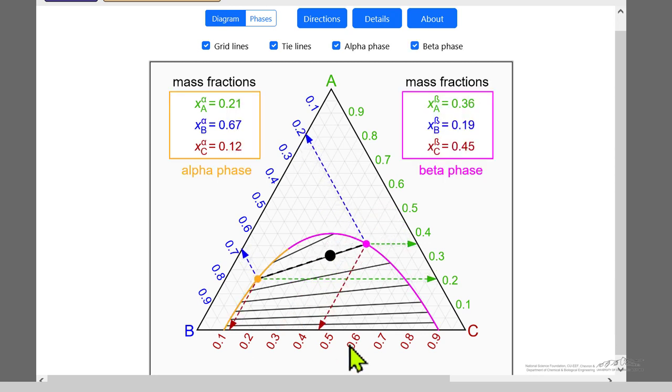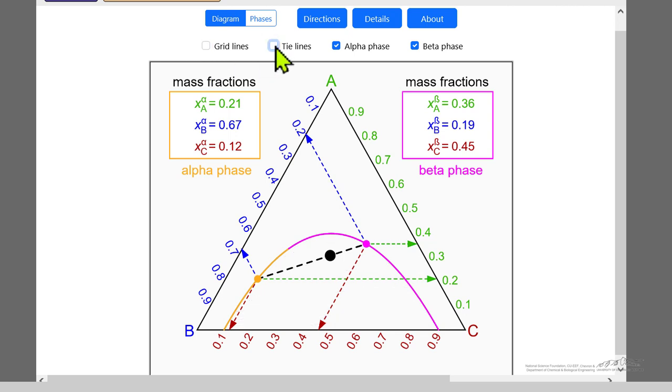If I move into the two phase region, and let's say we're on that tie line, then we're showing the compositions of each phase. I can show the grid lines or remove them. I can remove the tie lines to make it less complicated.